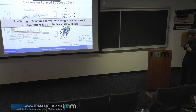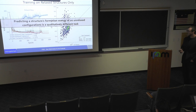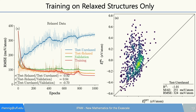When a structure is in an unrelaxed state, it is higher in energy. When we train on relaxed structures only, the model tries to extrapolate and predict a material in a higher energy state to also be higher in energy — which doesn't work. What we needed was to tell the model that instead of predicting the energy in the current state, we want to predict what the energy will be once we allow it to relax.